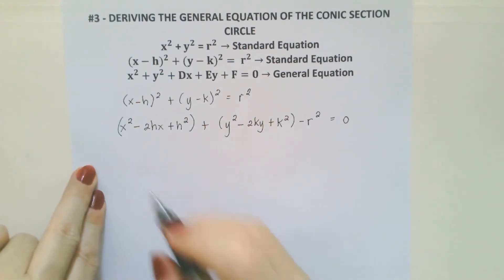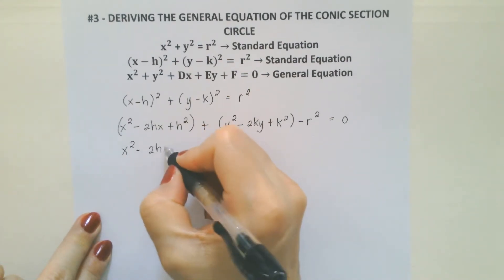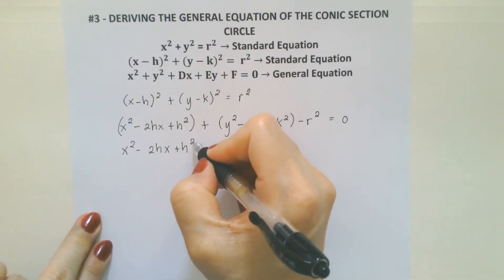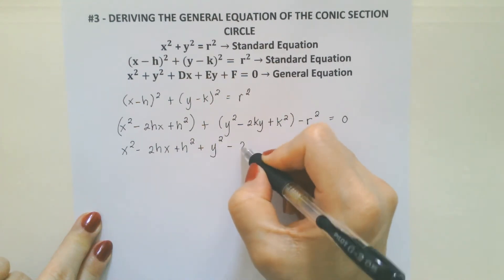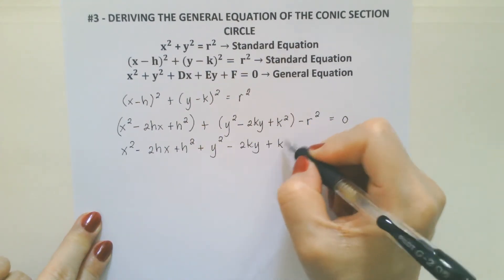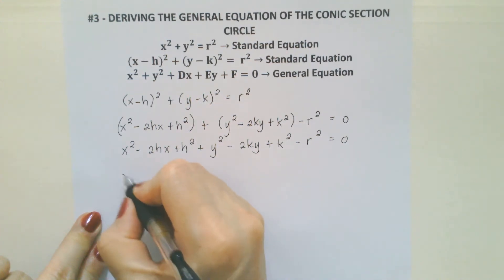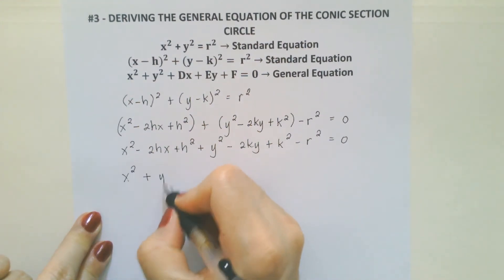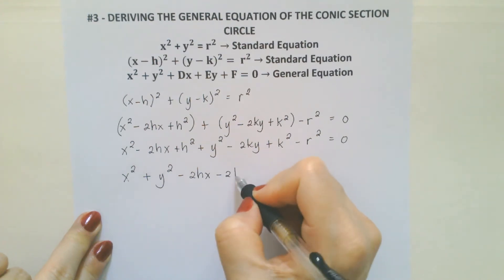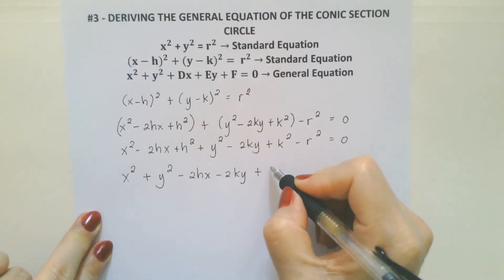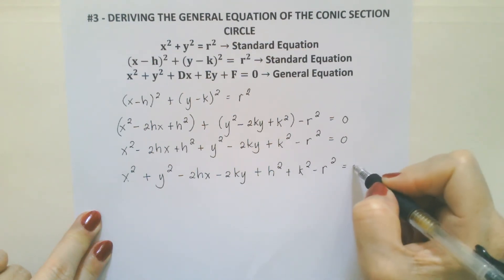Let's try to remove the parentheses and rearrange it. This is going to be x squared minus 2hx plus h squared. Since this is positive, we don't have to change the sign of the terms in the parentheses — just copy it: minus 2ky plus k squared minus r squared is equal to 0. Rearranging it: x squared plus y squared minus 2hx minus 2ky plus h squared plus k squared minus r squared is equal to 0.